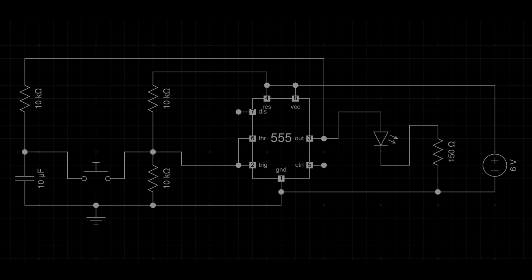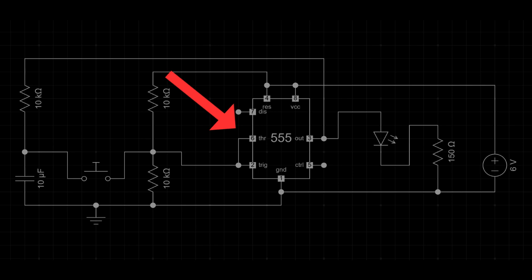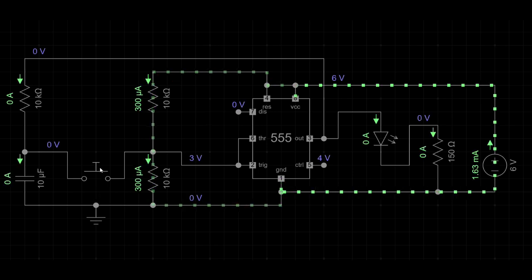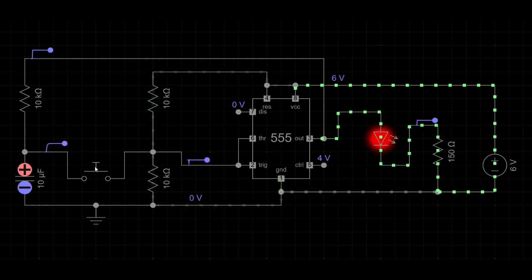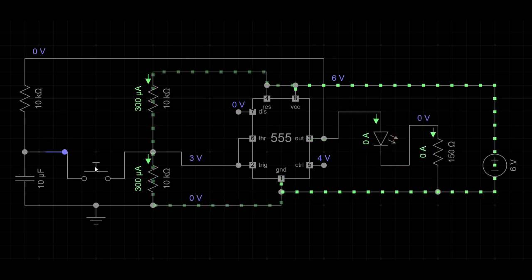Let's take a closer look at how this circuit works. The 555 timer operates in bistable mode, meaning it remains either on or off until triggered. This behavior is controlled by two key pins, pin two or trigger and pin six or threshold. Pin two activates the output when the voltage drops below one third of the supply voltage, while pin six deactivates the output when the voltage rises above two thirds of the supply voltage.